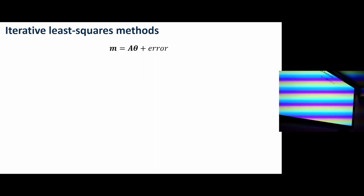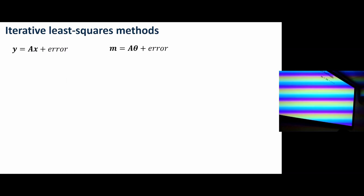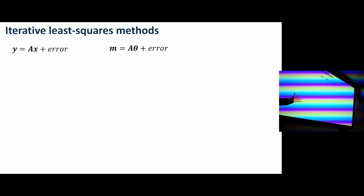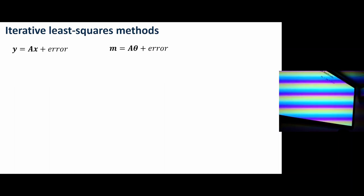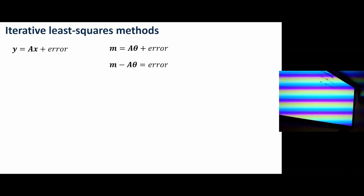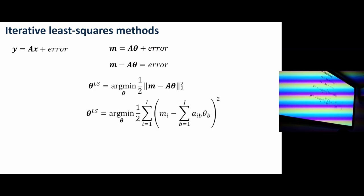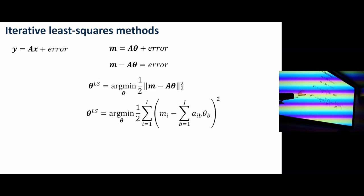Iterative least squares: the measured data equals our model plus some error, and that error can be due to noise and bias. To present this in a very general framework, you could have a general least squares problem where you've got some matrix A, some vector x, some response measurement y. m minus A theta is the error. So I've talked you through the least squares cost function, and we're trying to minimize that discrepancy between my model and my data.